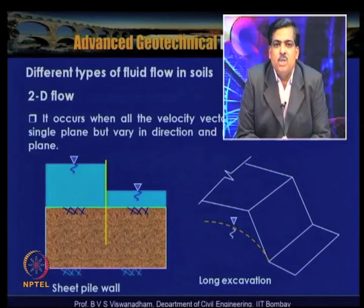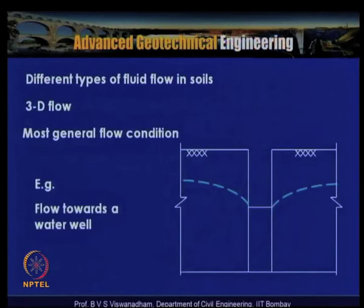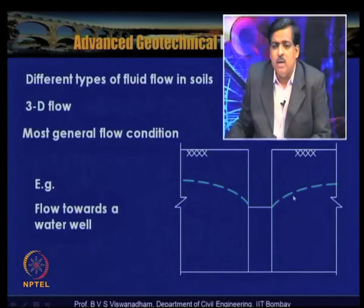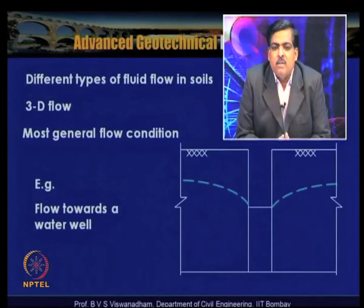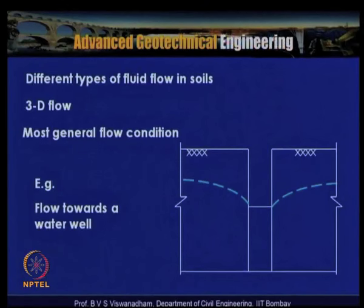The most general flow condition — three-dimensional flow — occurs in flow towards a water well, where water flows in all three directions x, y, and z, creating a depletion curve in the water table. Another example of three-dimensional flow is ground improvement using prefabricated vertical drains or sand drains, where flow occurs in x, z, and y directions due to the presence of drains in an impermeable soil.